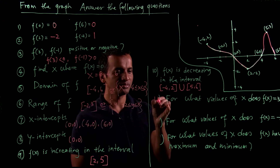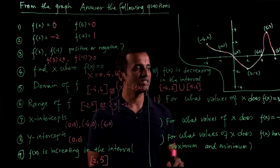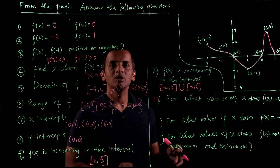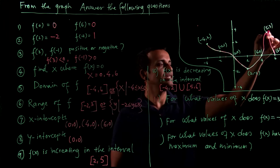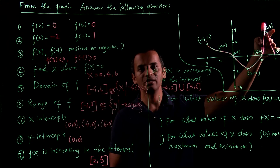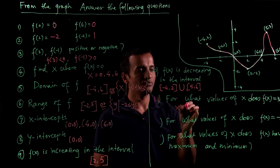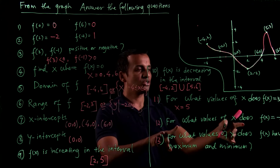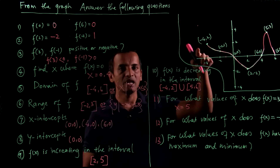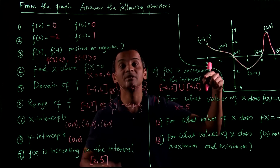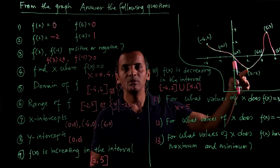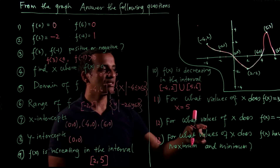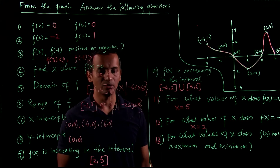Number 11 is: for what values of x does f(x) = 3? This is the only value of x where y is 3, so x = 5. Number 12 is: for what values of x does f(x) = negative 2? This is the only point where y is negative 2, so when x = 2, f(x) = negative 2.